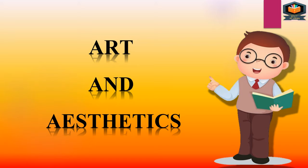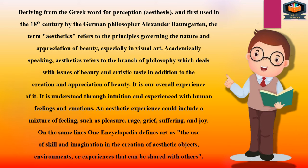First is Art and Aesthetics. Deriving from the Greek word for perception, aesthetics was first used in the 18th century by the German philosopher Alexander Baumgarten. The term aesthetics refers to the principles governing the nature and appreciation of beauty, especially in visual art.